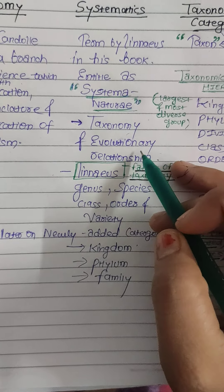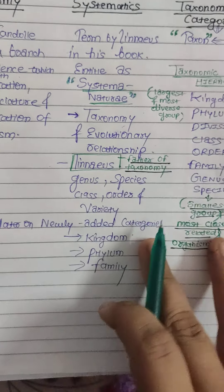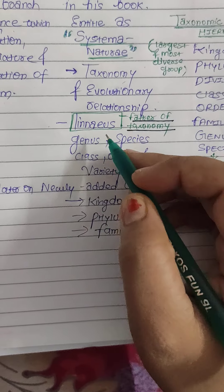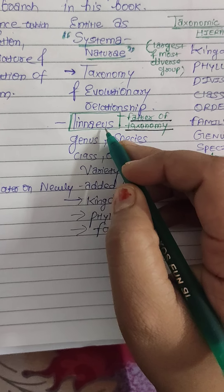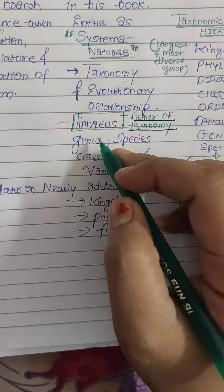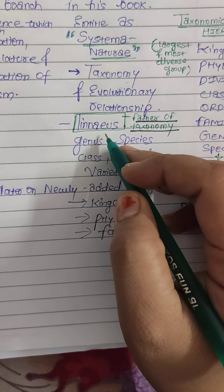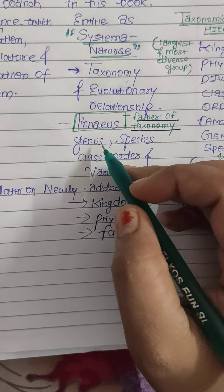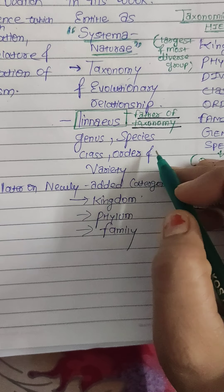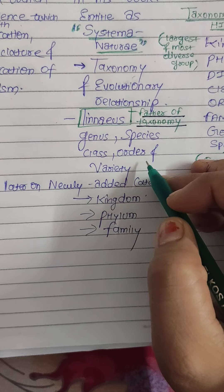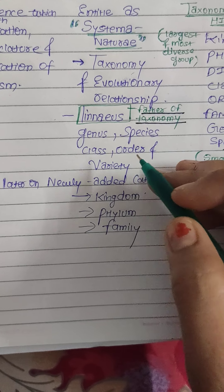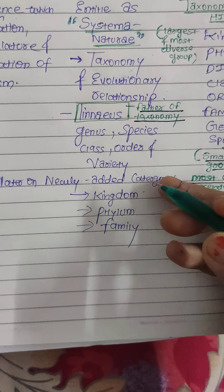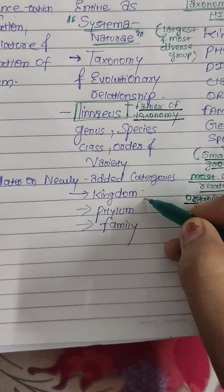Taxonomy means we have identified, named, and classified organisms, while systematics also studies the evolutionary relationships between organisms. Linnaeus, the father of taxonomy, originally gave some categories: genus, species, class, order, and variety.